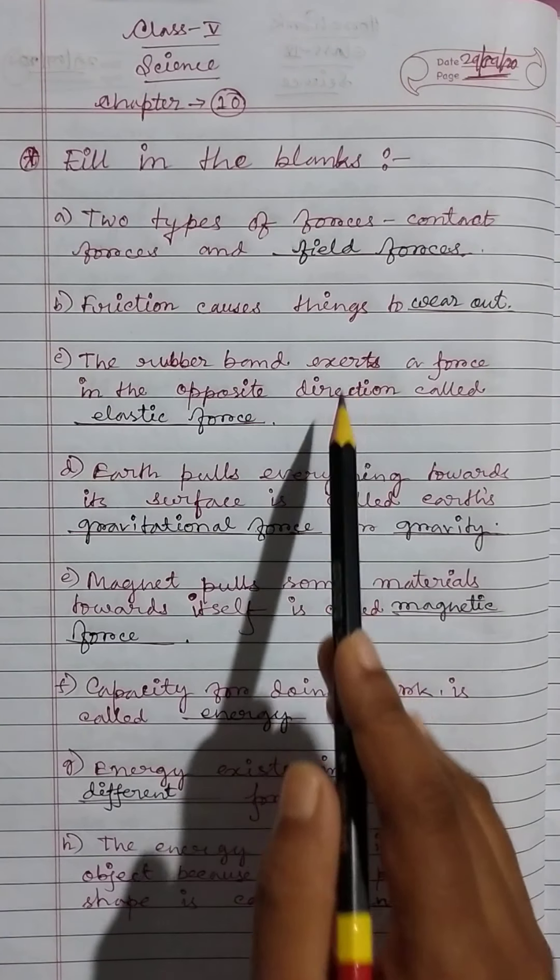Heat energy is used to cook food. Light is a form of energy that enables us to see things. The sun, tube lights, bulbs, and candles are some sources of light energy.